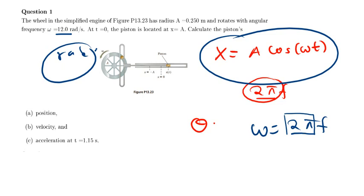So for part asking us to find the displacement of the particle from equilibrium - we were using angular frequency. Just a correction: we were supposed to put the calculator in radians, not degrees. The angular frequency stays the same but the calculator is supposed to be in radians, so the answer we found there is going to be different. Starting from here, the calculator is supposed to be in radians.